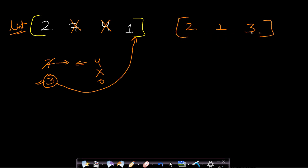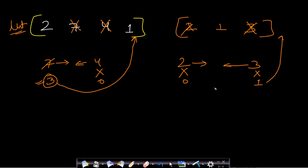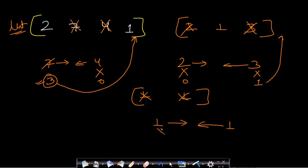Next, we take the two heaviest stones, 3 and 2, and smash them. The lighter stone (2) is completely destroyed, and 3 becomes 3 minus 2 = 1, which gets inserted back. The list is now [1, 1]. We pick both stones and smash them — since they have equal weights, both are destroyed. The list is now empty, so we return 0 as our answer.